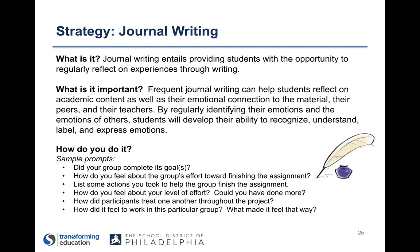Journal writing. What is it? Journal writing entails providing students with the opportunity to regularly reflect on experiences through writing. Frequent journal writing can help students reflect on academic content, as well as their emotional connection to the material, their peers, and their teachers. By regularly identifying their emotions and the emotions of others, students will develop their ability to recognize, understand, and label emotions. The key word here is frequency — when I taught, I did journal writing but not nearly as often as I should have, and we know that's when it becomes more effective.